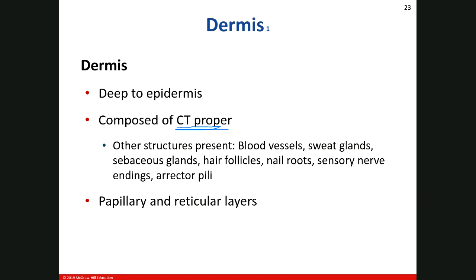We'll get into the specifics of the CT proper in a moment, but we see all the other stuff too. This is the layer where we see all the stuff in it — blood vessels, sweat glands (which are epithelial tissue), sebaceous glands, hair follicles (which are a derivative of the epidermis), nail roots, nervous tissue, sensory nerve endings, and muscle tissue — the erector pili muscle. So we're going to see all this stuff in the dermis.